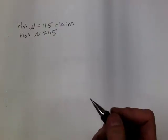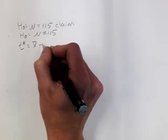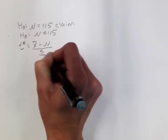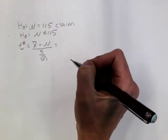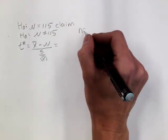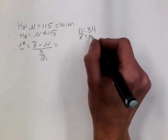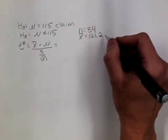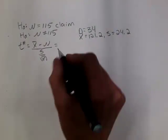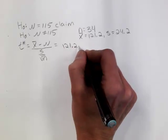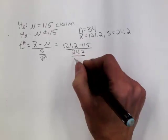So first I want to calculate the standardized test statistic. That's x bar minus the claimed parameter over s over the square root of n. So reading the problem for n is equal to 34, we had a mean of 121.2 and a standard deviation of 24.2. So to do this by hand, I would just plug and chug. I've got 121.2 minus 115 over 24.2 over the square root of 34.